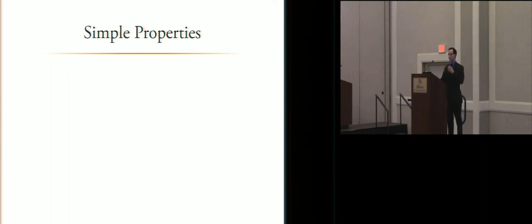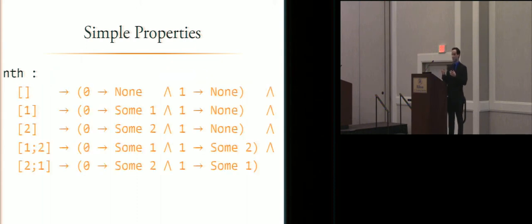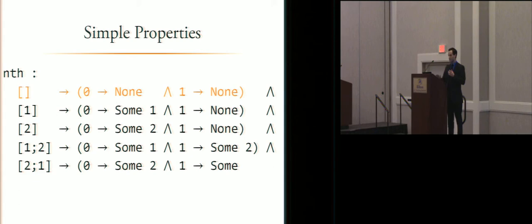So let's take a look at the list nth function. Given a list and a natural number index, nth returns an option containing either the indexth element of the list, if it exists, or none if it doesn't exist. And so here are the examples that are required to describe it in our prototype. So the nested intersection saves us a little bit of space. It provides us two different input-output examples for the second argument, when the first argument is, in this case, the empty list.